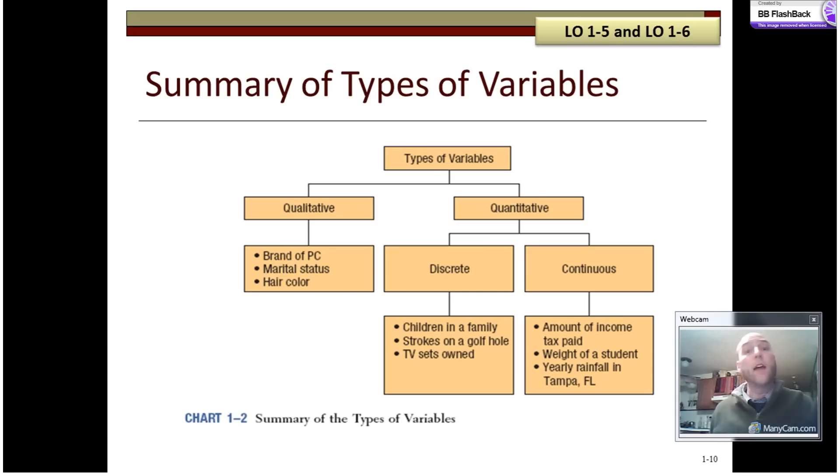Quantitative variables can be broken out into discrete or continuous. If you're counting something, like the number of children, the number of strokes, or the number of televisions that you have, that would be discrete. Continuous, on the other hand, is the type of thing that you would measure, like the length of the spiderweb off of this spider right here. So, the length of this spiderweb is about three inches. The number of legs that he has is eight. Countable number of discrete legs. Continuous length of web.